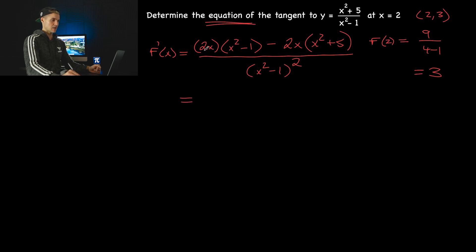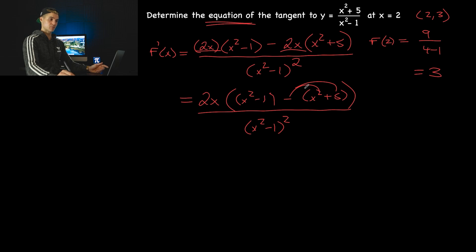However, if you did want to simplify, I'm noticing I could take out a 2x here from both of these, so I'd be left with x squared minus 1 minus this entire bracket, x squared plus 5. You've got to keep that in brackets like that. That's going to be all over x squared minus 1 squared. And then if I distribute the negative inside this bracket, notice the x squares will cancel out. Then we'll have negative 1 minus 5, which would give us negative 6 times the 2x would give us negative 12x. And that's going to be all over x squared minus 1 squared like that.